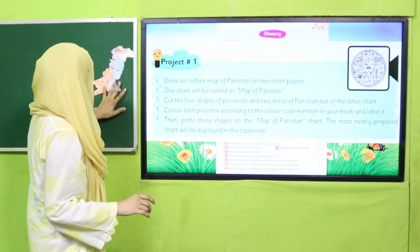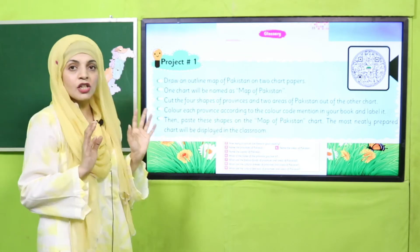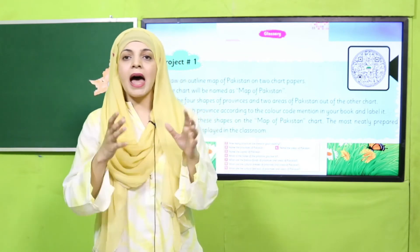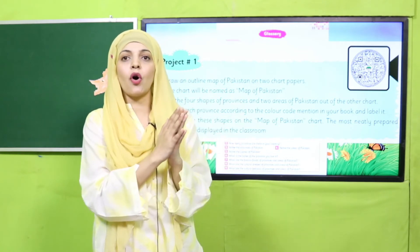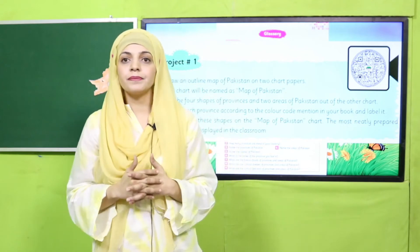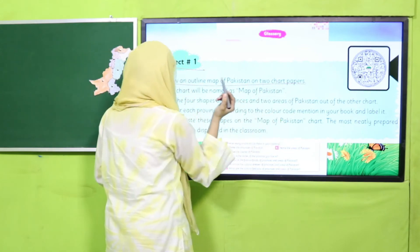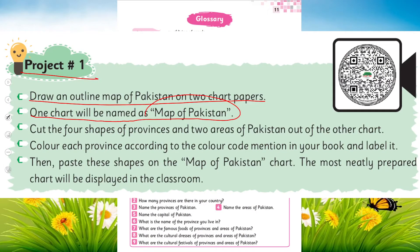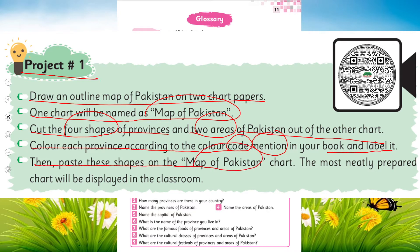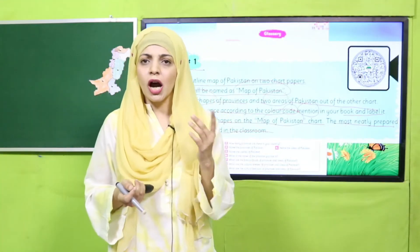All the areas and provinces are pasted, then the teacher will collect the maps from the groups and paste them on the soft board or in your classroom. So we have done the project: one — draw the outline map of Pakistan on two chart papers; two — cut the four shapes of the provinces and two areas of Pakistan out of the other chart; color each province according to the color code mentioned in your book, label it, then paste these shapes on the map of Pakistan chart. The most neatly prepared chart will be displayed in the classroom.